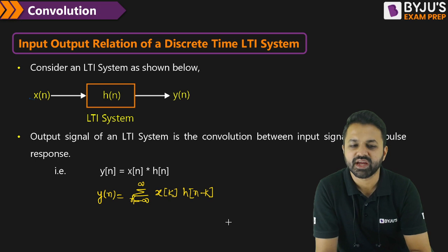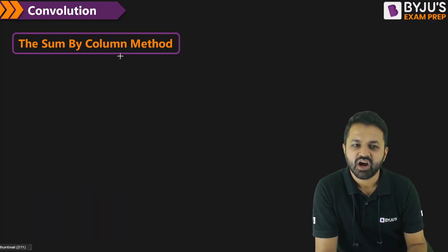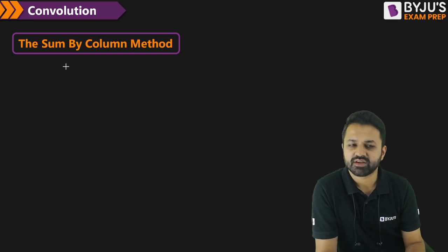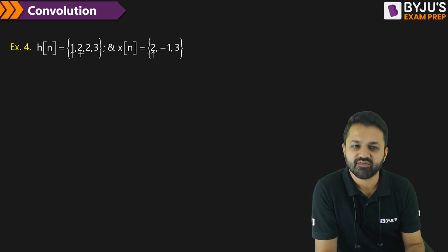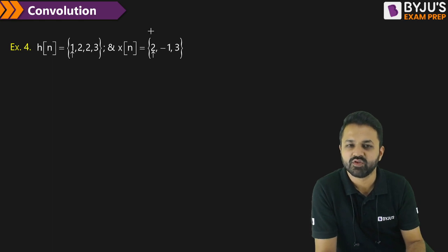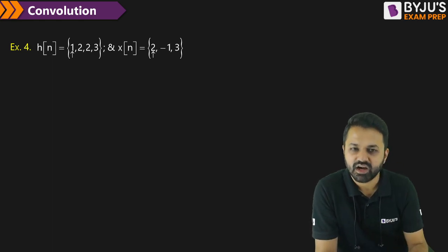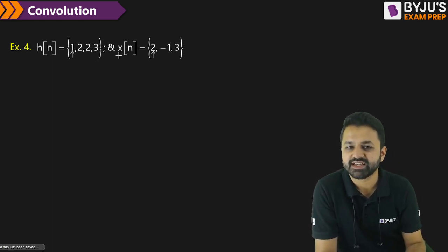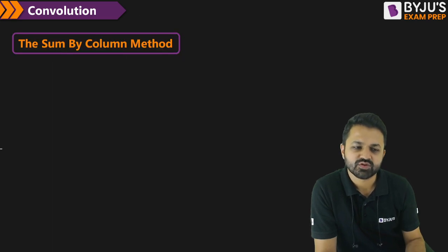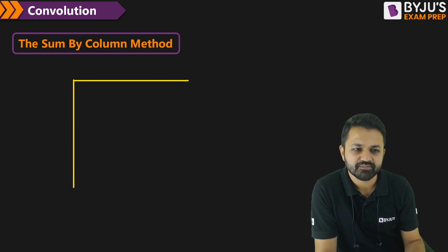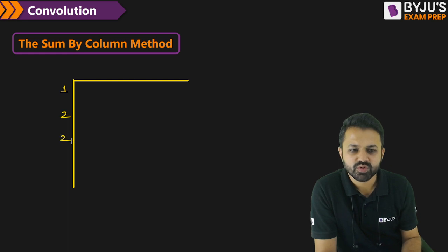Now let us see how to calculate in a shortcut method. Suppose we have the signals 1, 2, 2, 3 and 2, minus 1, 3, and we want to perform the convolution sum — because these are discrete time signals. By the sum-by-column method, we represent them: this is 1, 2, 2, 3.